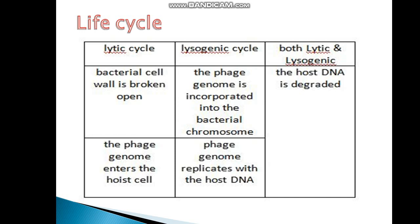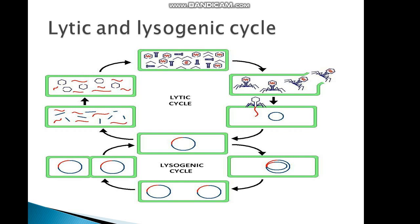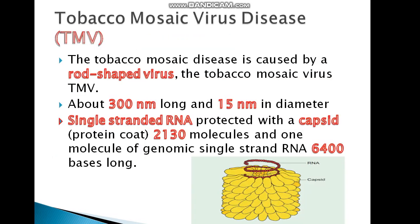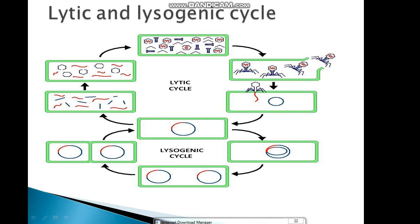We have two cycles: the lytic cycle and the lysogenic cycle. In the lytic cycle, the virus infects a bacterial cell, completes viral replication, and the bacterial cell is destroyed. In the lysogenic cycle, the viral DNA integrates into the bacterial cell DNA, and the bacteria can continue to multiply, carrying the viral DNA.